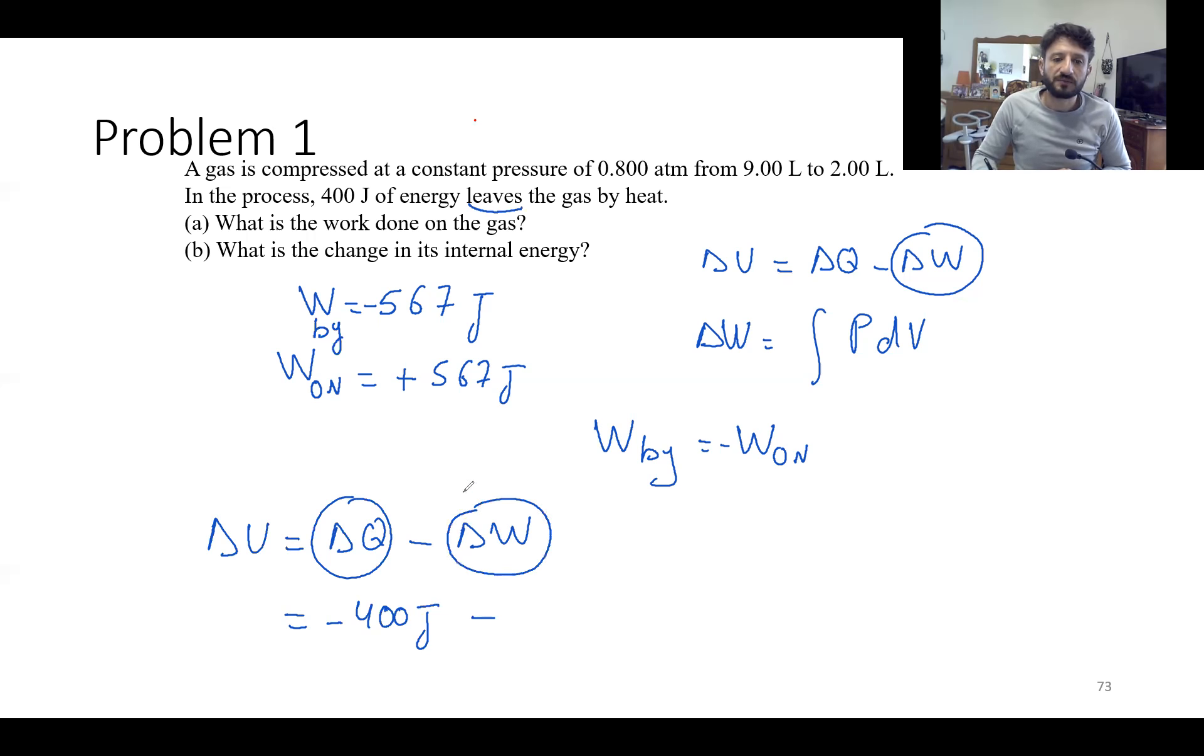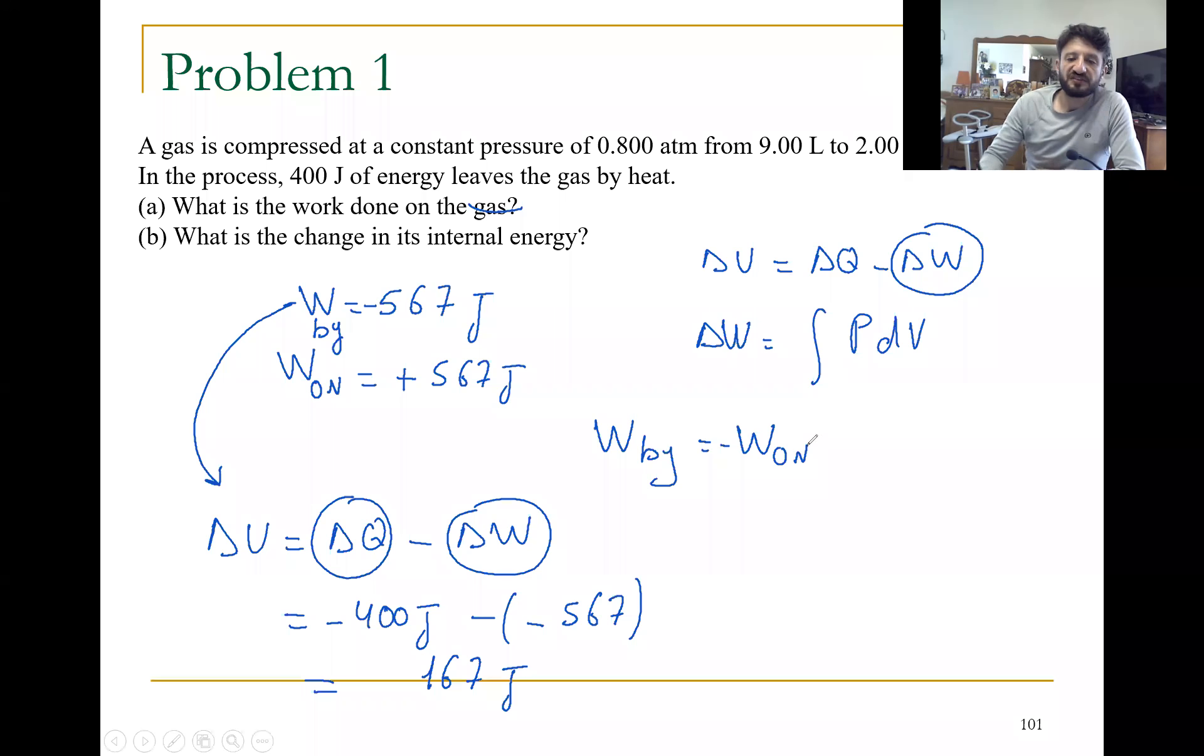Minus the omega. Here I use always, you know, in this equation we use omega_by. Omega_by equals minus 567. We get here minus, we have 167 joules. It's a positive value, so physically...